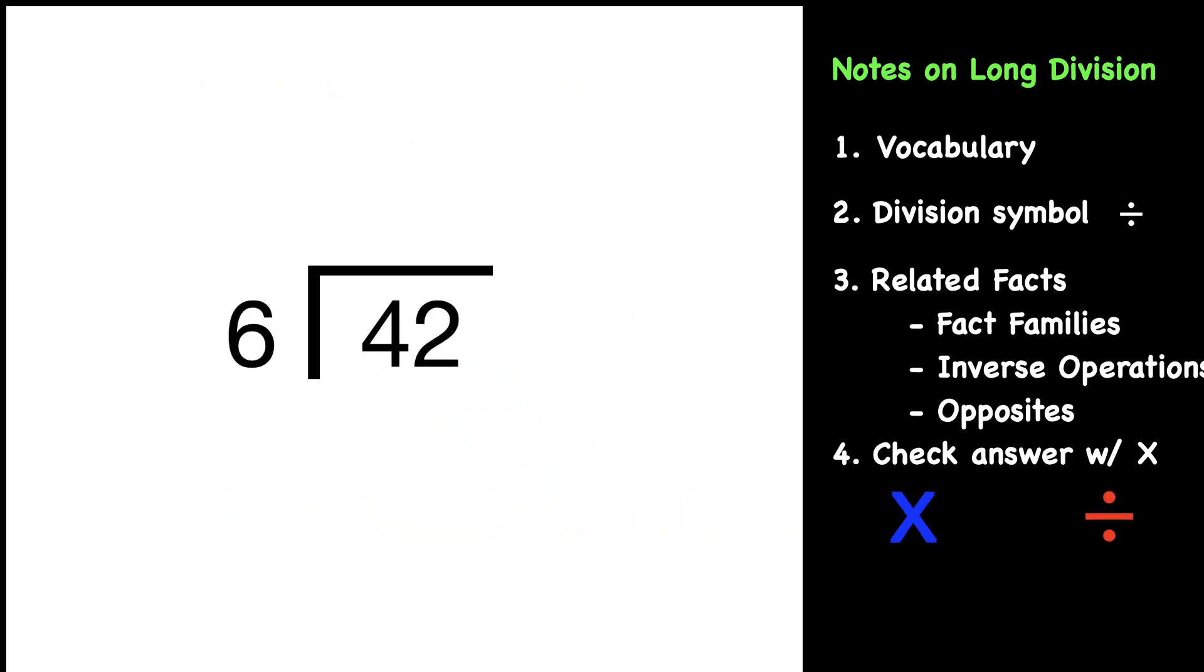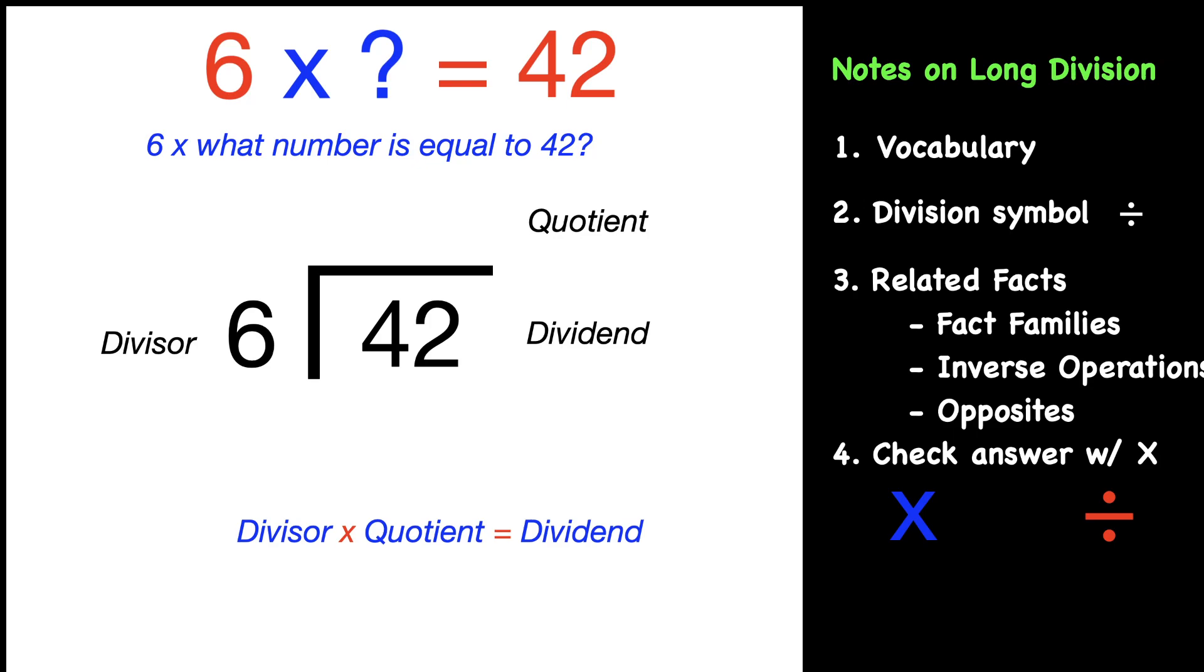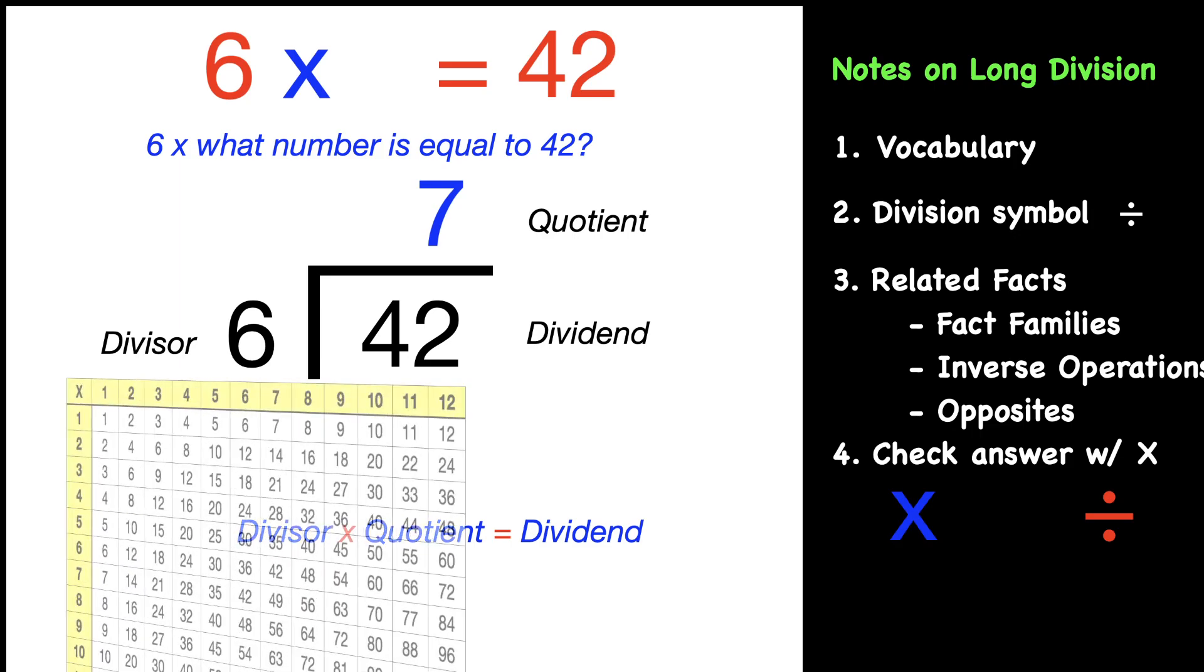42 divided by 6, and we're going to use our strategy of multiplication or related facts. Remember, it's our divisor of 6 times our quotient, which we don't know. So we'll put that as a question mark. But we do know it equals 42. Ask yourself: 6 × ? = 42. Well, that would be 6 × 7. So because of related facts, your quotient is 7.